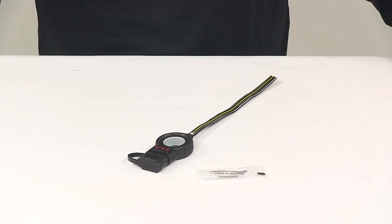That's going to do it for today's look at the Hopkins Endurance Easy Pull Harness with a four-pole flat connector for the trailer end.